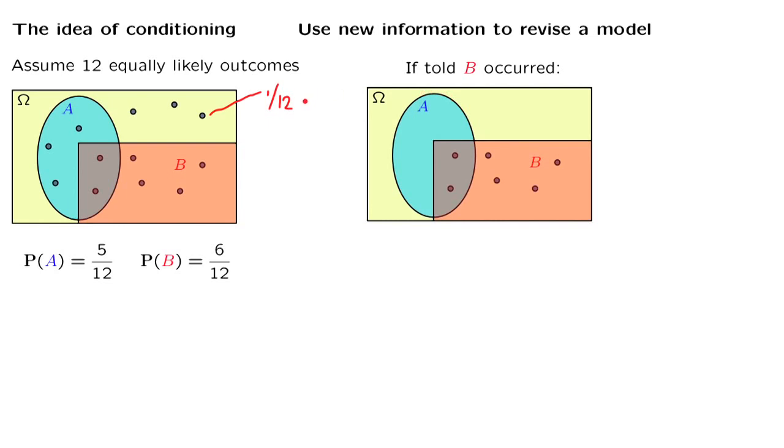First, those outcomes that are outside event B are no longer possible. So we can either eliminate them, as was done in this picture, or we might keep them in the picture but assign them zero probability so that they cannot occur.